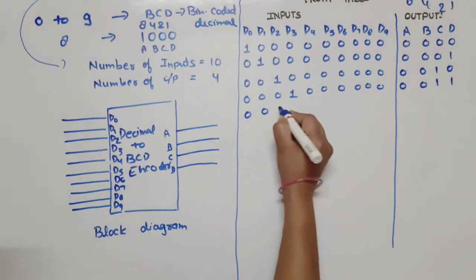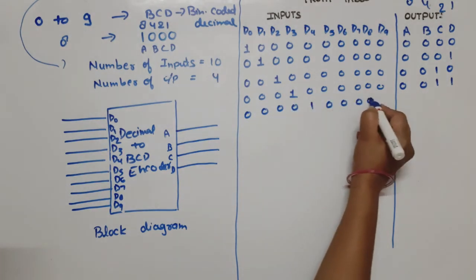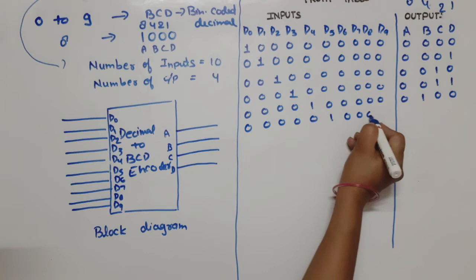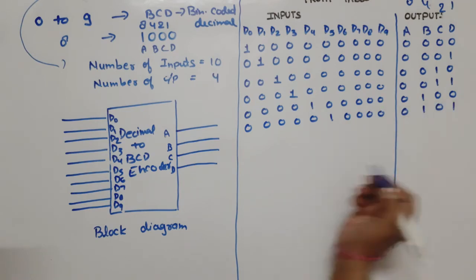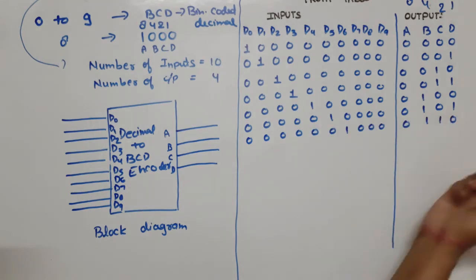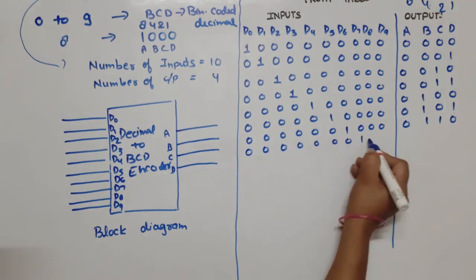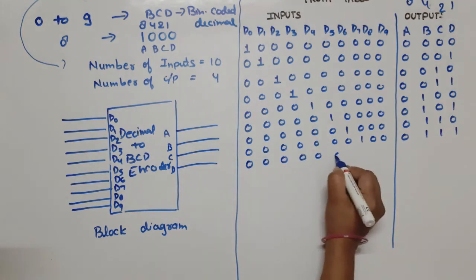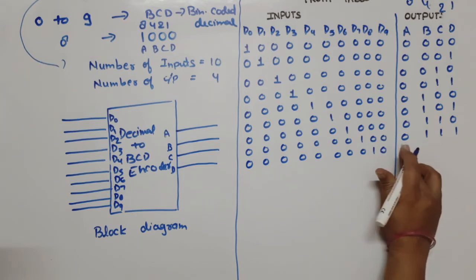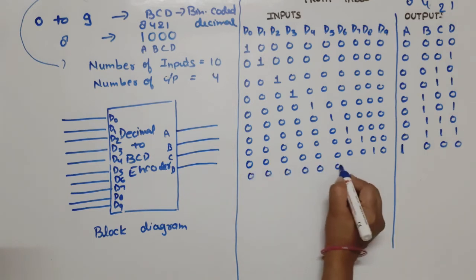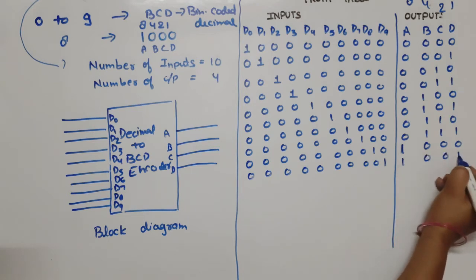D4 will be high, remaining all zero - output is 0100. D5 high, remaining zero - output is 0101. D6 high, remaining zero - output is 0110. D7 high, remaining zero - output is 0111. D8 high, remaining zero - output is 1000. Last decimal number is nine, its BCD code is 1001.